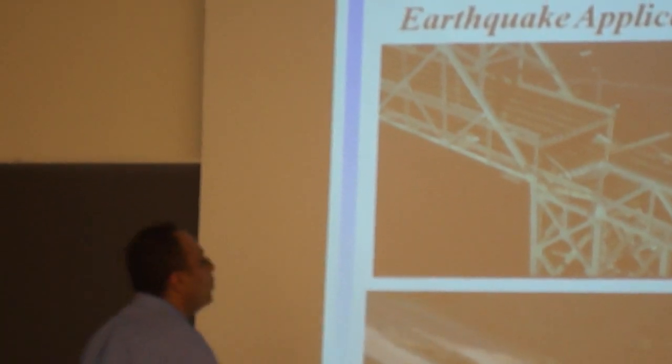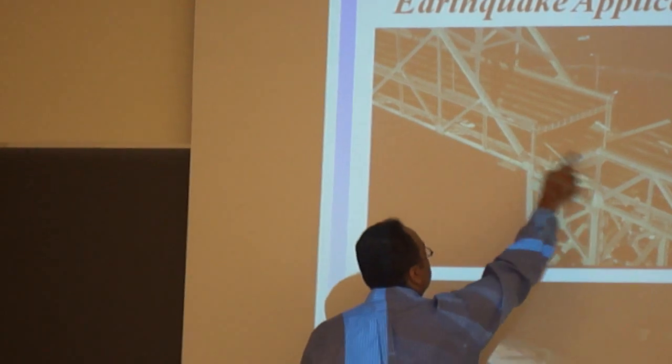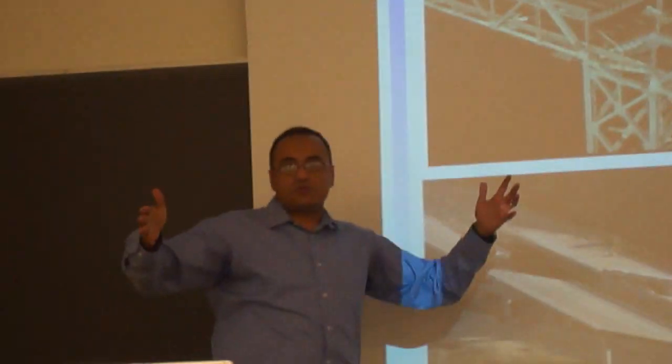You can see the collapse in the form of what? One of the spans, this is what we call a span, between two columns or two supports as the span falls down. Now, let's see why this happened. I'll explain to you in my next slide.